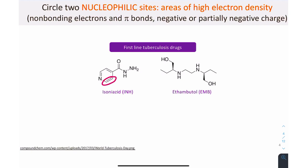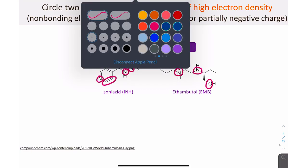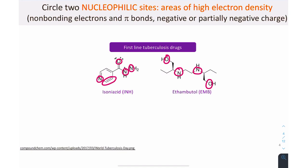I'll circle pi bonds if they are the nucleophilic site, and the atom itself if that is the nucleophilic site. I can circle the nitrogen and oxygen atoms that bear non-bonding electrons, and even the pi bonds can be nucleophilic.